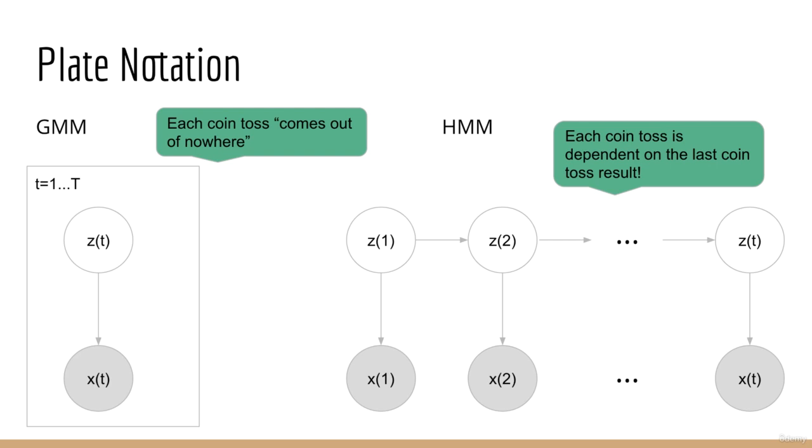To understand this more clearly, we can use what is called plate notation. In plate notation, we can express repeated samples. That is, for the GMM, we explicitly state the time dependence. So instead of just Z, we say Z(t), and instead of just X, we say X(t). In the corner, we say that little t goes from 1 up to big T. Now we can compare the GMM and the HMM more directly, since now both graphical models have a time index.